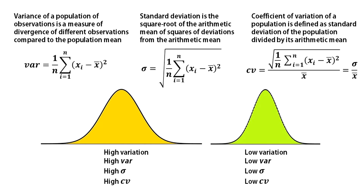Variance of a population of observations is a measure of divergence of different observations compared to the population mean. See the expression here. Standard deviation is simply the square root of variance. Standard deviation of a set of observations is the square root of the arithmetic mean of squares of deviations from the arithmetic mean. In other words, standard deviation can be called the root mean square deviation from the mean.